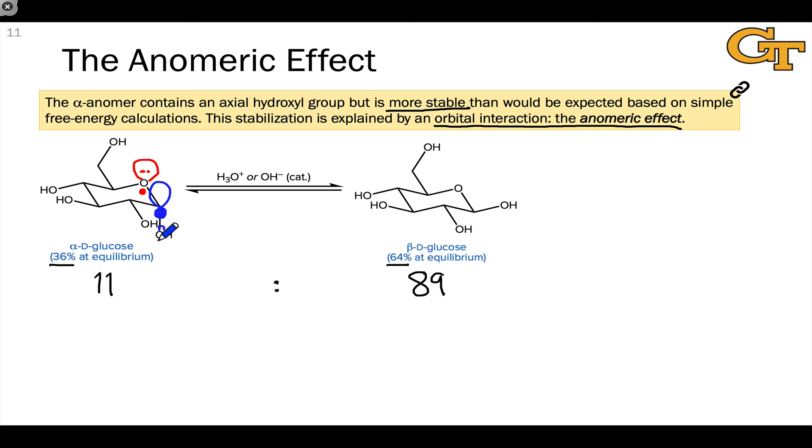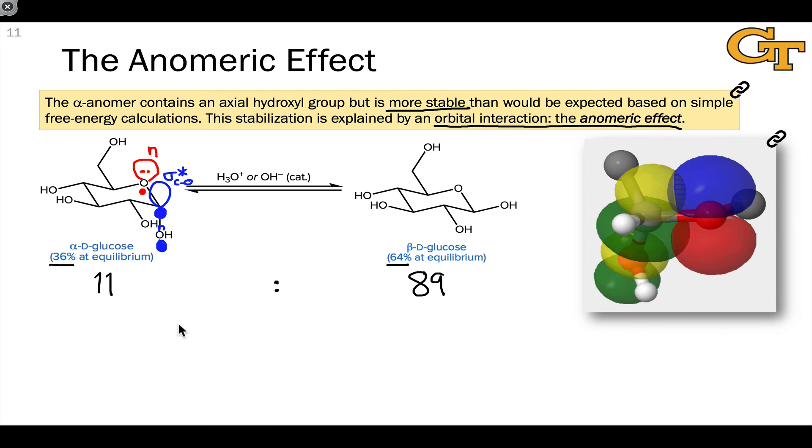In this axial anomer, we have the potential for an orbital interaction from the electron-rich in orbital to the electron-deficient sigma star orbital for the C-O bond. It's this orbital interaction that stabilizes the alpha anomer over the beta anomer, where this interaction is not possible.